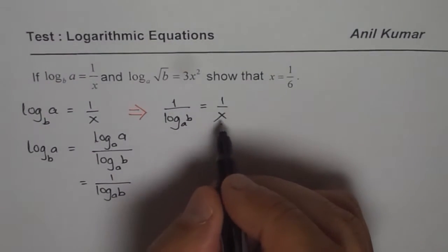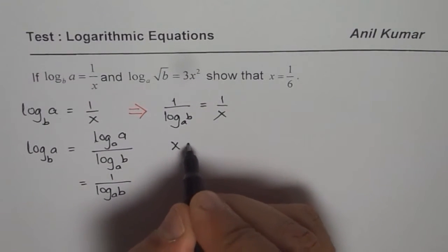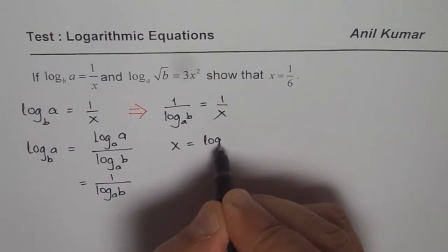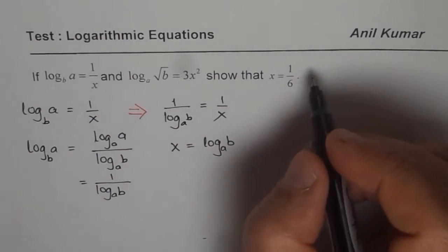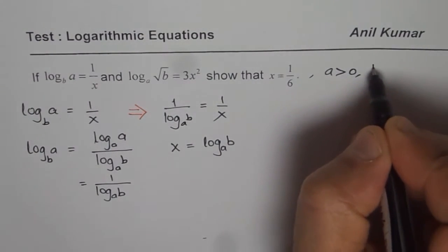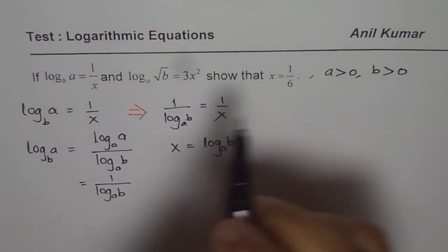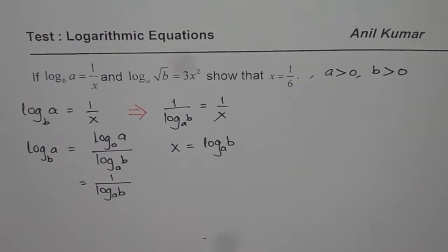And that shows that x should be equals to log a of b. So that is what we get. And of course in this particular equation, we know that a is greater than 0 and b is also greater than 0.